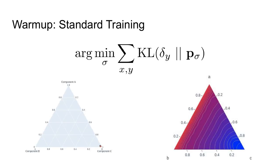One option is to just train the student model directly as a supervised model. In this case, we're entirely ignoring the teacher. We can write out our standard objective in the following form: we'd like to find the best parameter sigma for our student model that gets us as close as possible in KL distance to the true answer. This corresponds exactly to the standard cross-entropy or maximum likelihood loss. I like using this KL form because we can visualize what the model is trying to learn — we'll visualize it in terms of a simplex, where each point represents a distribution.